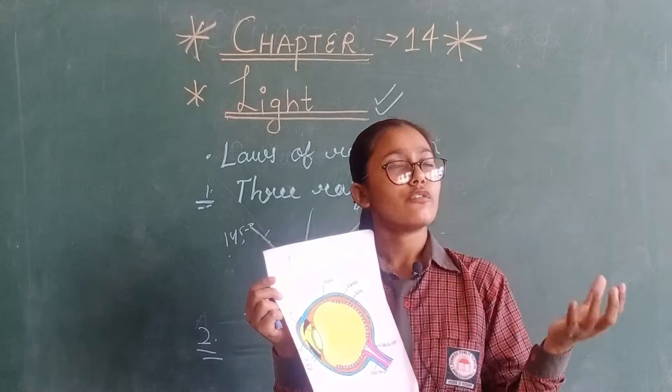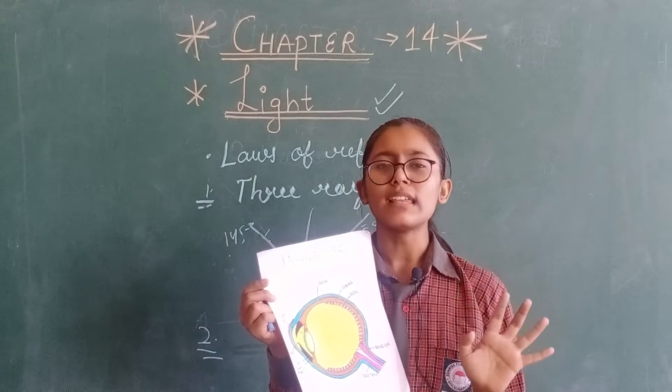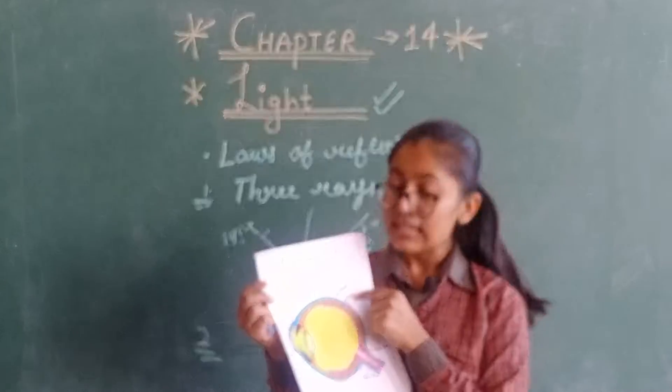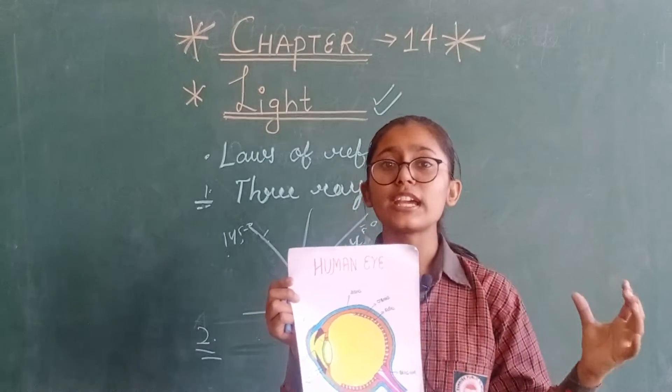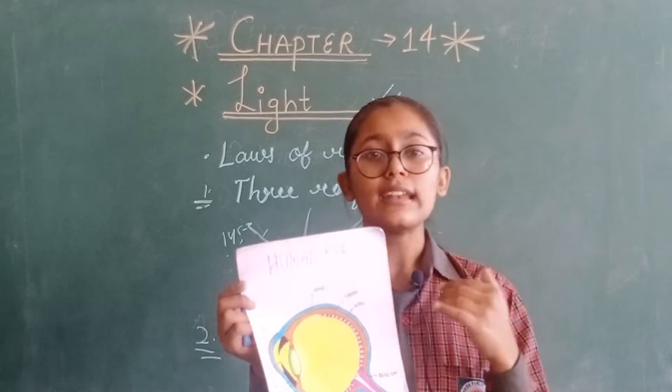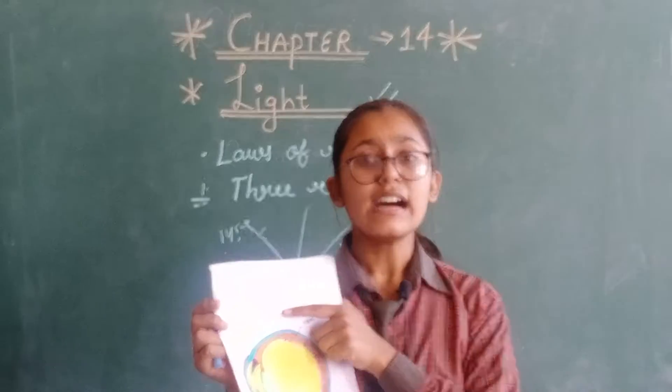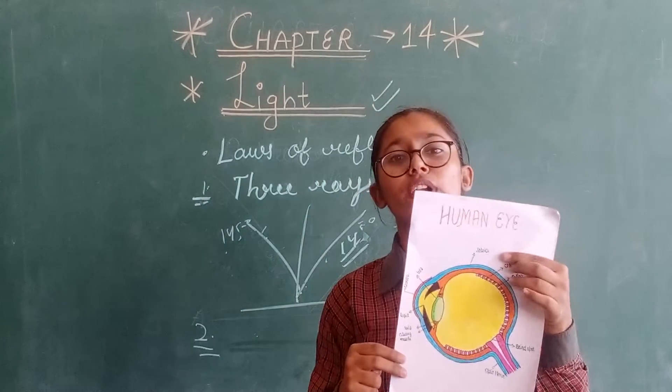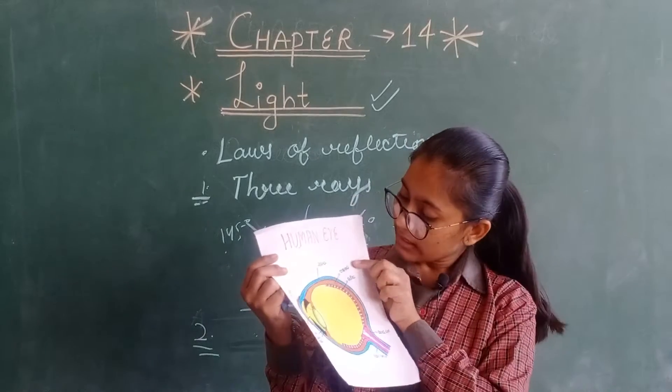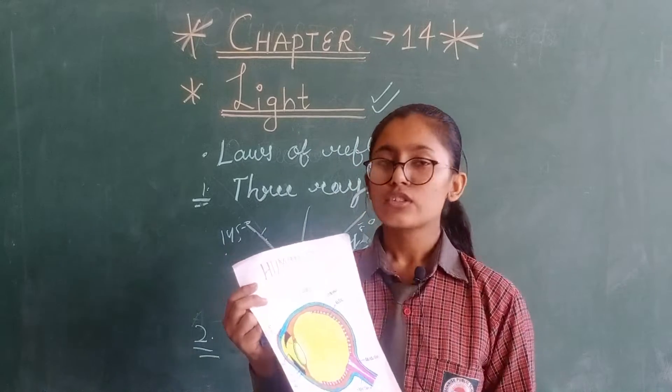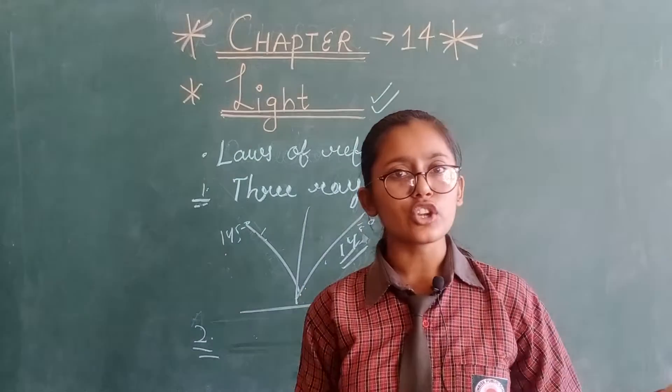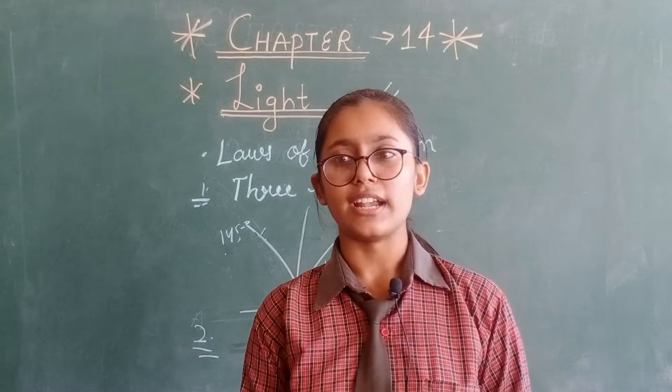And this is retina. Retina is the place where the image of objects is formed in our eye. This is sclera. It is the white body of the eye. This is choroid. It is the layer present in the eye. So students, this is the structure of the eye. I hope you understand it.